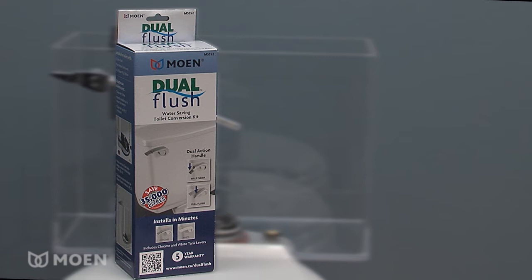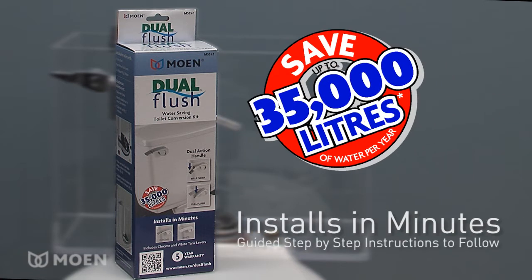Convert a 13-liter toilet to a water-saving dual flush toilet in minutes, saving you up to 35,000 liters per year.